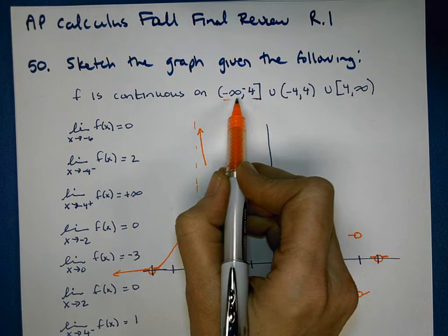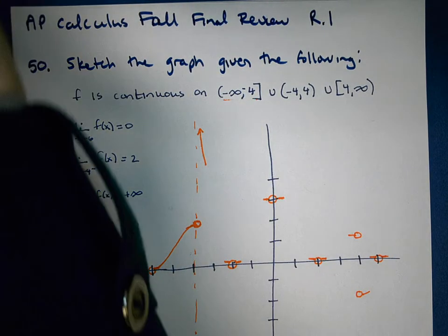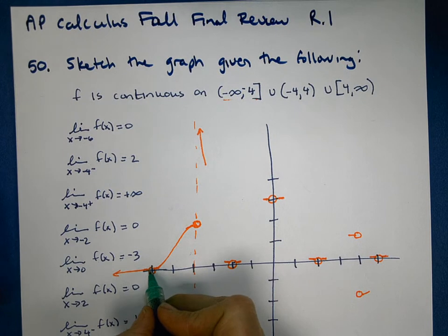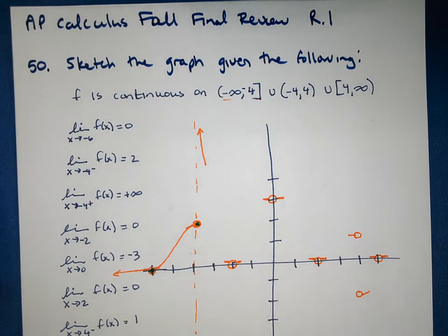Because it's continuous from negative infinity to negative 4, including negative 4, I'm going to make the decision that these can't have holes in it. It has to be connected. So I'm going to fill in those holes. So it's one continuous line there.